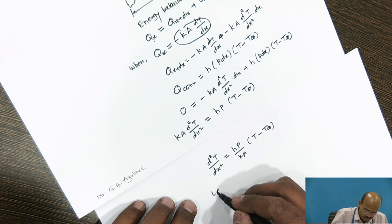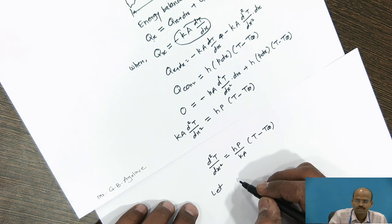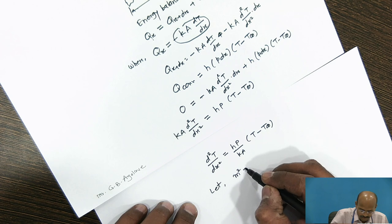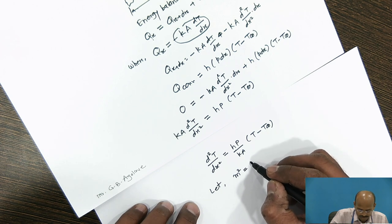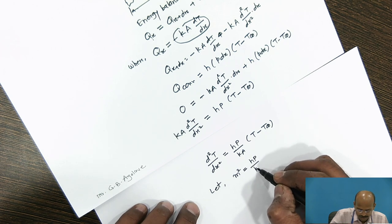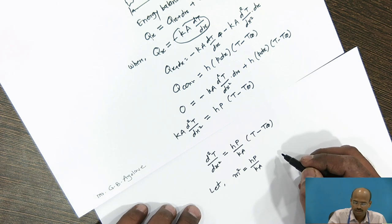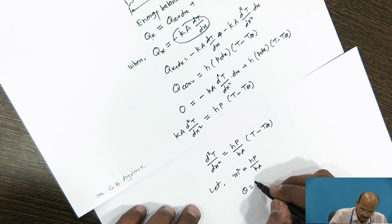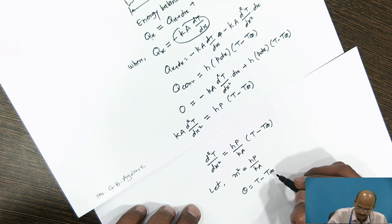I can simplify this equation as d²T/dx² is equal to (hP/kA)(T - T∞). Here we consider new term: let m² equal to hP/kA and θ is equal to T - T∞.